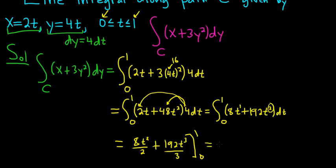This is equal to 8 over 2 is 4, so we have 4t squared. And 192 over 3 is equal to 64, so 64t cubed. And we're going from 0 to 1.